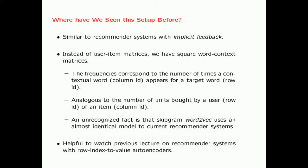One unrecognized fact is that the skip-gram Word2Vec model uses an almost identical model to current recommender systems with implicit feedback. Current recommender systems with implicit feedback use a technique called logistic matrix factorization. And as we will see, one of the variations of the skip-gram model is actually a weighted form of logistic matrix factorization. Since the nature of this architecture is very similar to the recommender system architecture discussed in the previous lecture, it would be helpful to watch the previous lecture on recommender systems with row-index-to-value autoencoders.